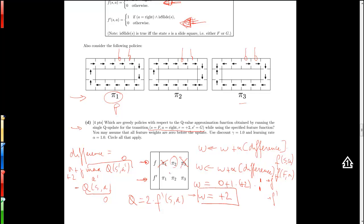Yes, pi 1 is greedy with respect to this Q function. For pi 2, also we move right when the slide is available. For pi 3, also we move right whenever the slide is available. So this is our answer to the last question.